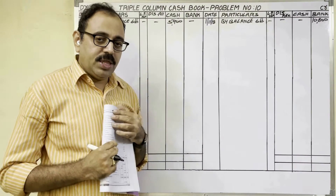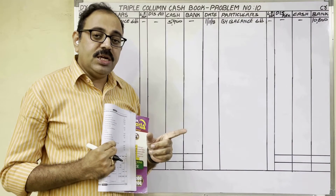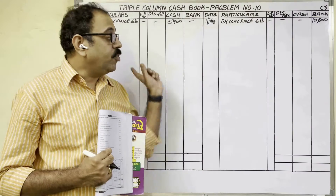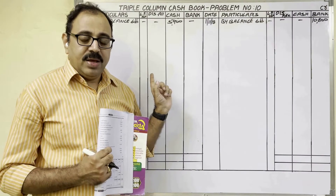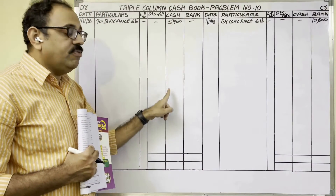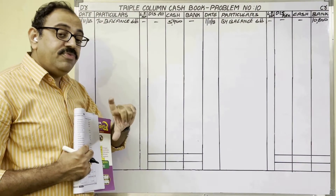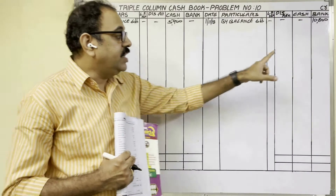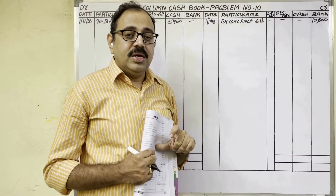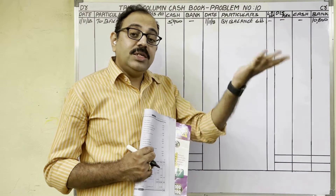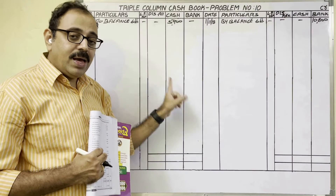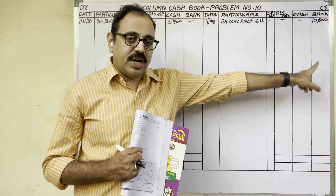From the next entry onwards, transactions are given. To record transactions in the triple column cash book, there are two methods: the general interest method and the shortcut method. I am going to explain the shortcut method. According to that: if cash is coming into the firm, write on the debit side in the cash column; if cash is going from the firm, write on the credit side in the cash column. If bank balance is increasing, write on the debit side in the bank column; if bank balance is decreasing, write on the credit side in the bank column.